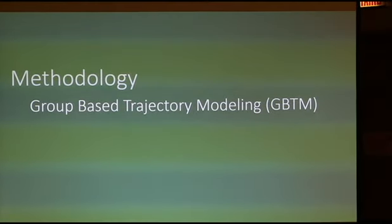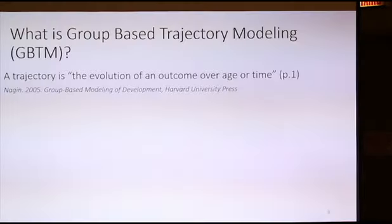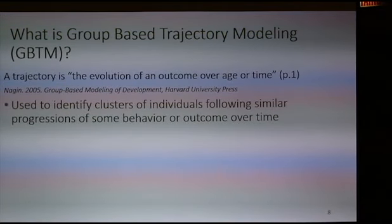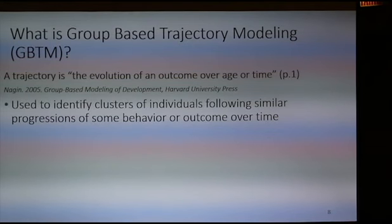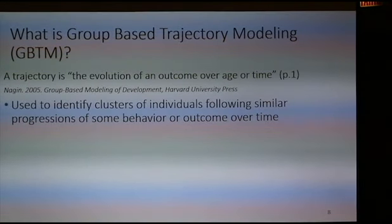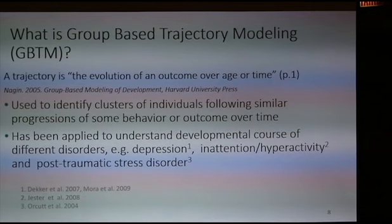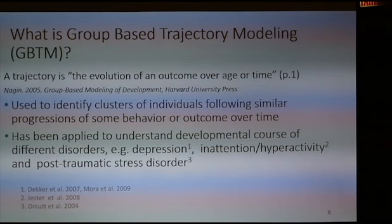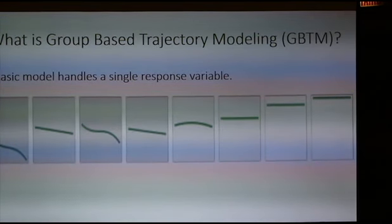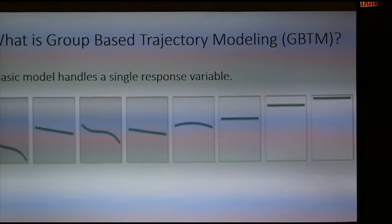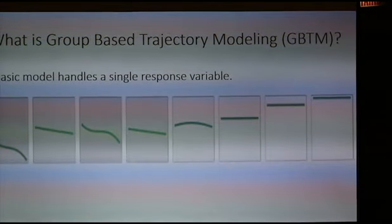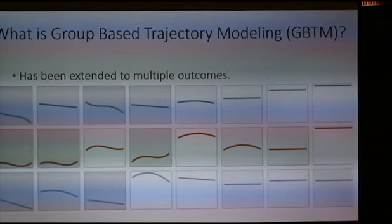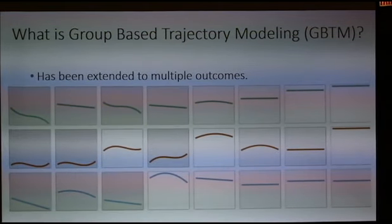To analyze the data, we use a method called group-based trajectory modeling (GBTM). GBTMs allow us to identify clusters of individuals that follow a similar progression of some outcome over time. This method, first developed in the criminological context, has been applied in various clinical settings as well. In its basic form the model handles a single response variable — in the CKD context, that could be the eGFR. But the model can be extended to multiple outcomes, allowing us to integrate all the other relevant complications of CKD.